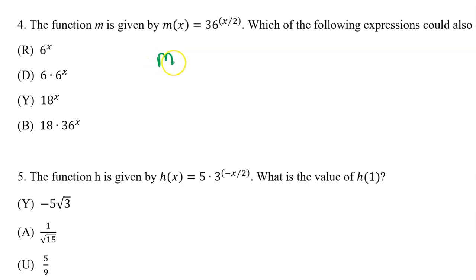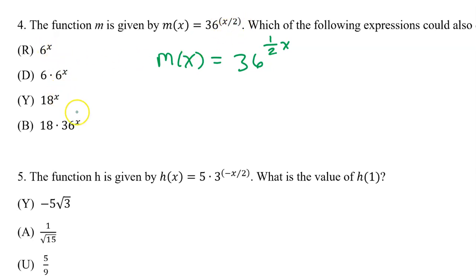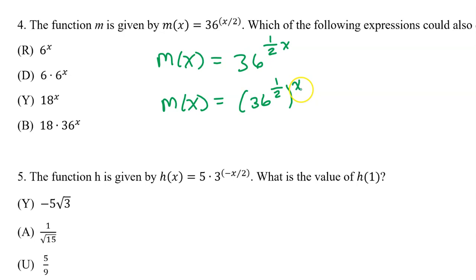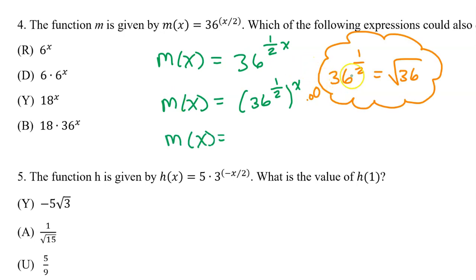Number 4: m(x) equals 36 to the 1 half x power. One half x is the same as x over 2. All of the answer choices have a plain x as the exponent, so I need to separate this x away from the rest of it. m(x) will equal 36 to the 1 half power, all raised to the x power. 36 to the 1 half power is the same as the square root of 36, which is 6. So we are left with m(x) equals 6 to the x power, and the answer is R.